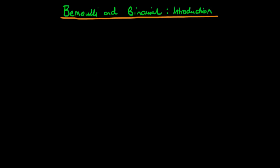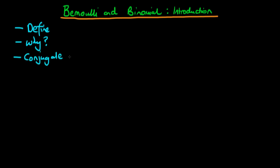In this video I want to provide an introduction to the Bernoulli and binomial distributions. We're going to start off by defining what each of these distributions is — starting with the Bernoulli and then introducing the binomial a bit later on. We're also going to talk about why we might want to use each of these distributions, and finally we'll talk about the conjugate prior to each of these distributions, which in both cases happens to be a beta distribution.